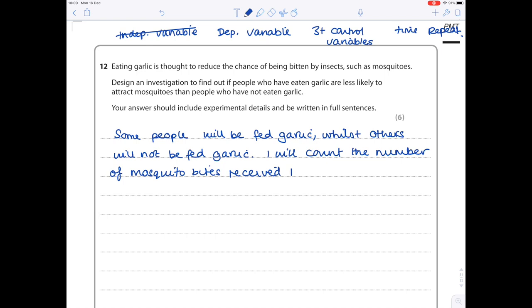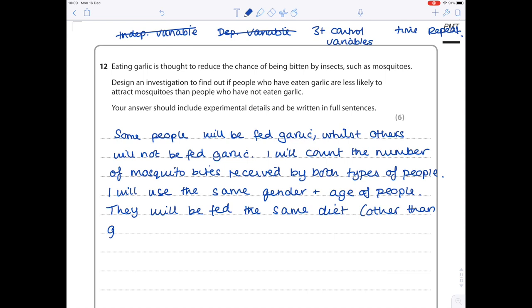At least three control variables - anything sensible. I will use the same gender and age of people. What else could make a difference? I'm just making up stuff here. They will be fed the same diet other than garlic consumption, because obviously that's what we're changing. And obviously if you're naked you're going to receive more bites than if you're fully clothed, so they need to wear similar clothing. They will wear the same clothing.